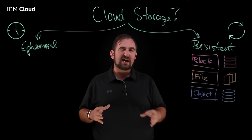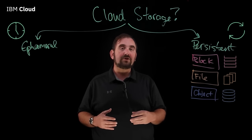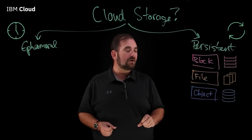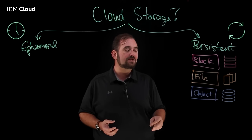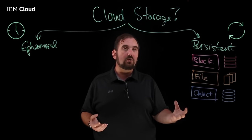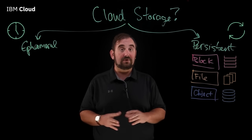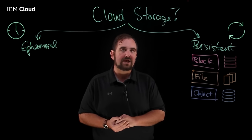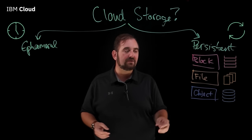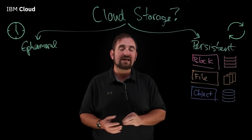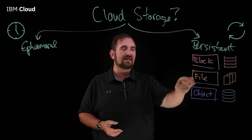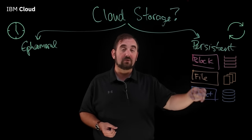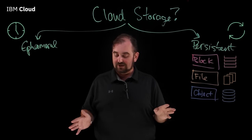For object storage, there are additional pricing metrics related to how often you put data into the object storage buckets, how often you retrieve it, and what level of availability you want. Object storage is typically good for both warm and cold storage. If you've got data you need to keep for legal reasons but don't think you'll ever access, you can put that into a cold storage object bucket at a very low rate — dramatically less than block, file, or standard access level object — and as long as you aren't constantly writing to it, you'll keep that very low rate.